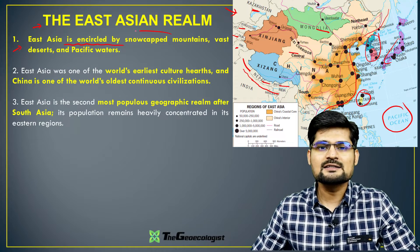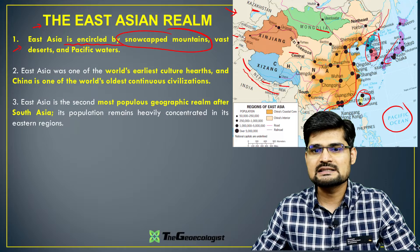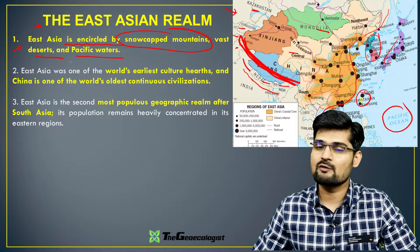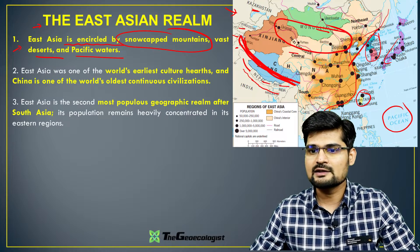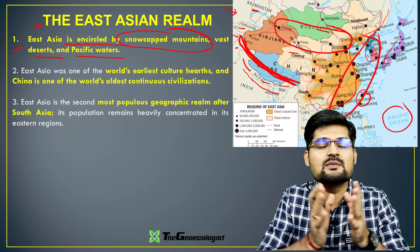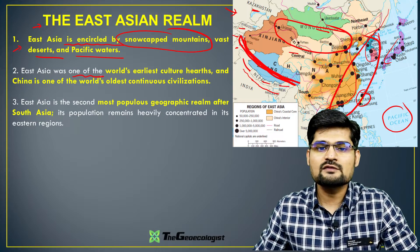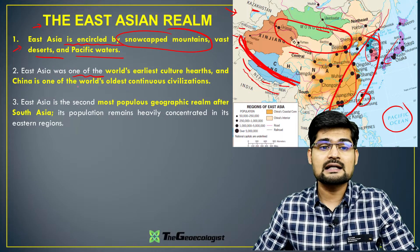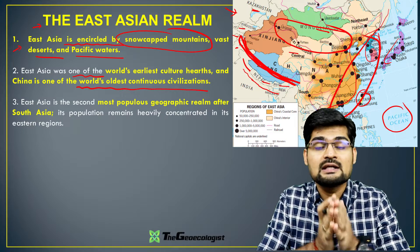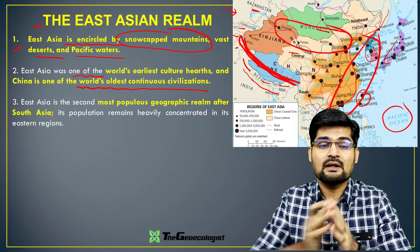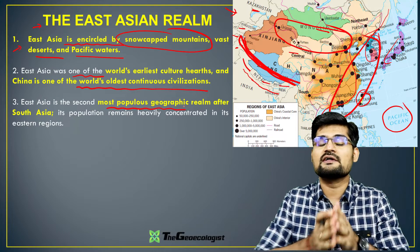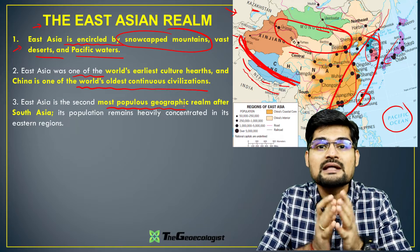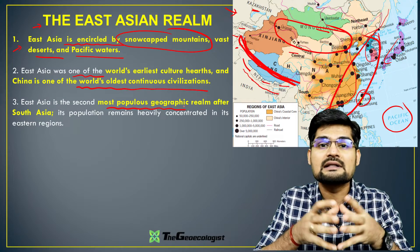East Asia is encircled by snow-capped mountains — the Himalayan region — vast deserts, and Pacific waters. These are the three major aspects of this realm. East Asia was one of the world's earliest cultural hearths. Chinese civilization is very important and China is one of the world's oldest continuous civilizations. East Asia is the second most populous geographic realm in the world, after South Asia, making population one of the biggest factors in this realm.